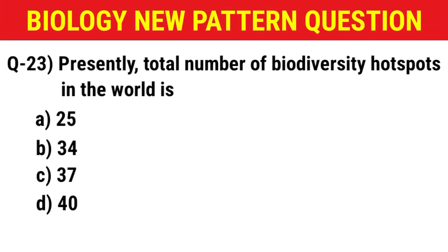Next question: The presently recognized total number of biodiversity hotspots in the world is — (A) 25, (B) 34, (C) 37, (D) 40. The correct answer is option B: 34.